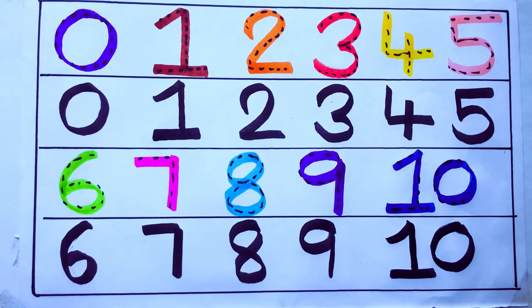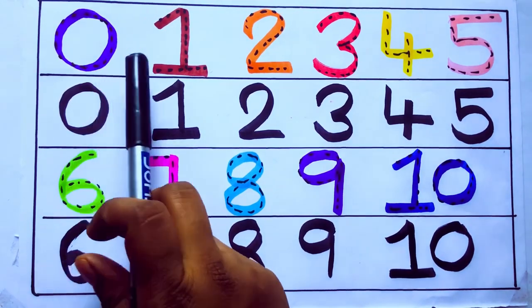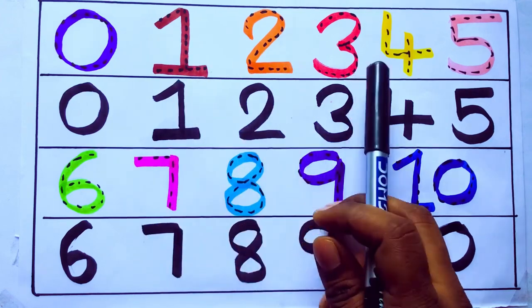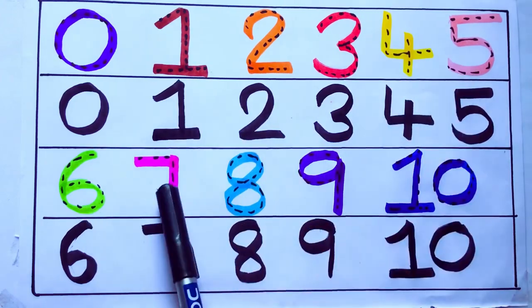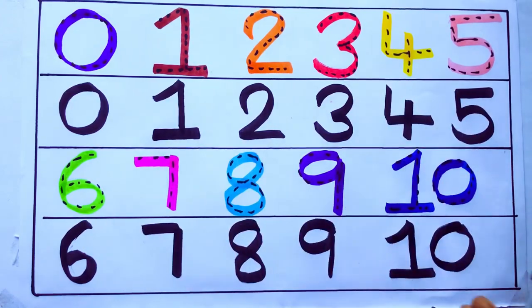1 second learning numbers: 0, 1, 2, 3, 4, 5, 6, 7, 8, 9, 10. Okay.